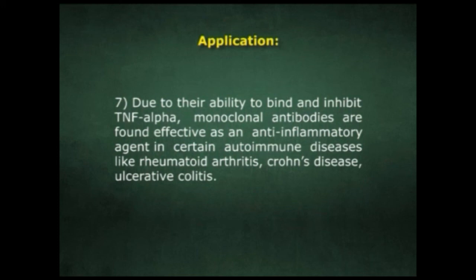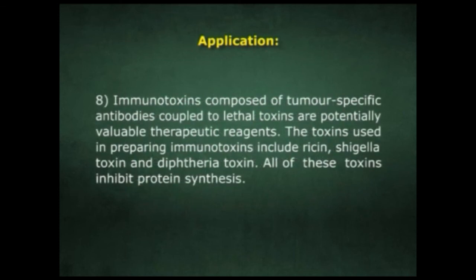For certain research, diagnostic, and therapeutic purposes, monoclonal antibodies derived from a single clone and thus specific for a single epitope are preferable. Due to their ability to bind and inhibit tumor necrosis factor alpha (TNF-alpha), monoclonal antibodies are found effective as anti-inflammatory agents in certain autoimmune diseases like rheumatoid arthritis, Crohn's disease, and ulcerative colitis. Immunotoxins composed of tumor-specific antibodies coupled to lethal toxins are also potentially valuable therapeutic reagents. The toxins used in preparing immunotoxins include ricin, shiga toxin, and diphtheria toxin — all of which inhibit protein synthesis.